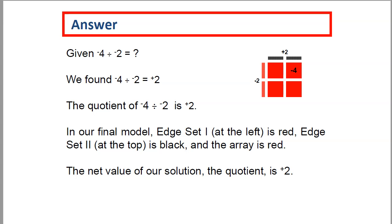For our answer, we found that negative 4 divided by negative 2 equals positive 2. The quotient of negative 4 divided by negative 2 is positive 2.